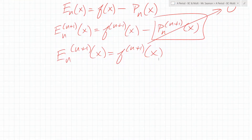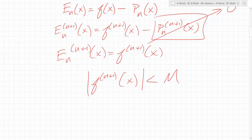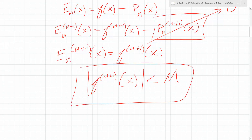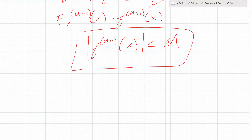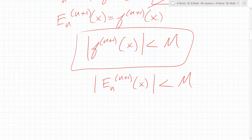Let's keep going and see if we get to something helpful. In our investigation, let's say we were able to find some bound M for the absolute value of the n plus one derivative of f — some maximum value. This is the core of everything. If we find an M, that gives us a bound for the n plus one derivative of the error. But we really want a bound for E sub n itself, not its nth derivative. So we expand it into a compound inequality.